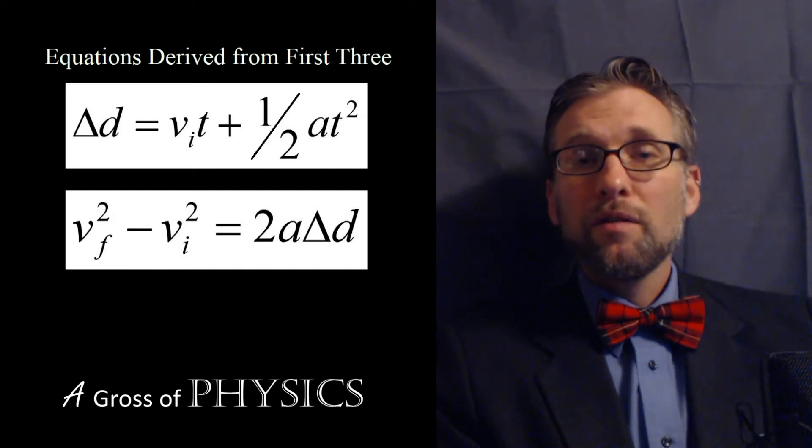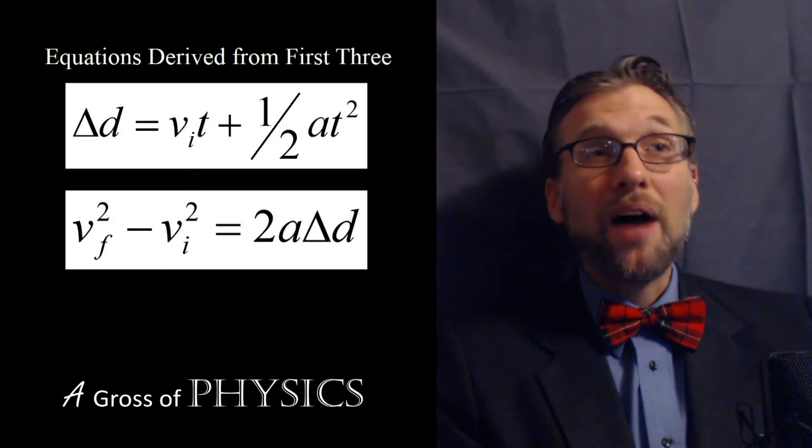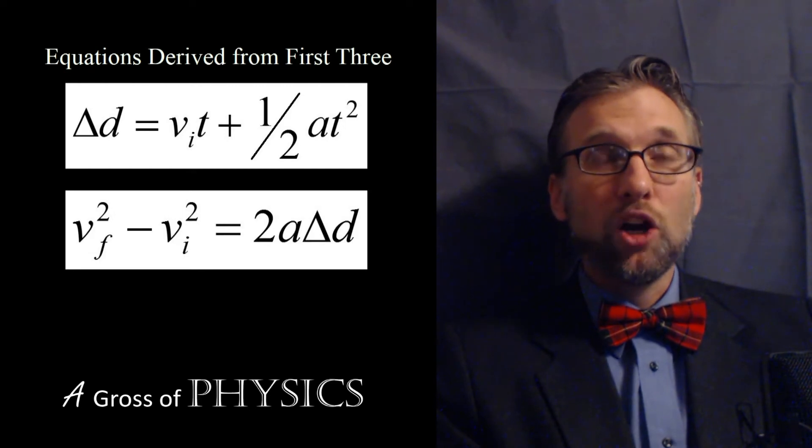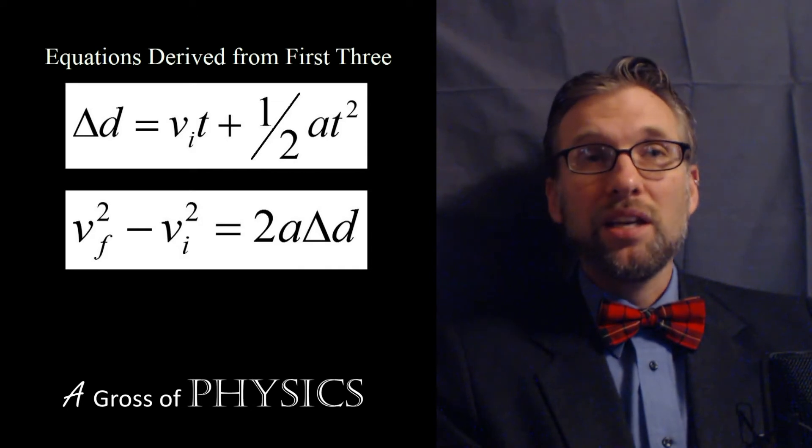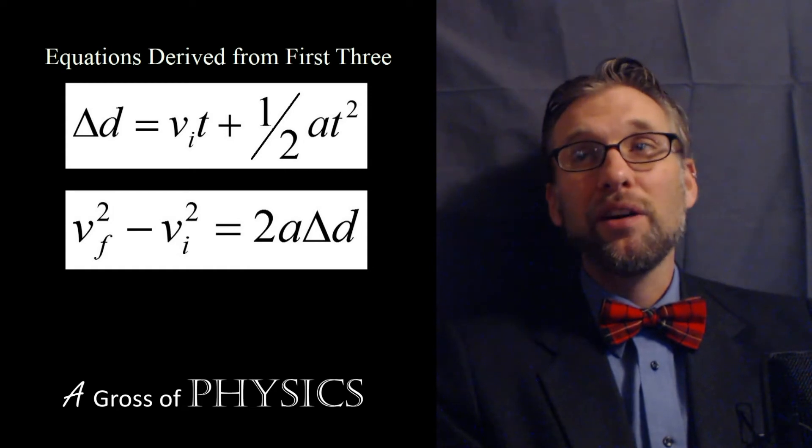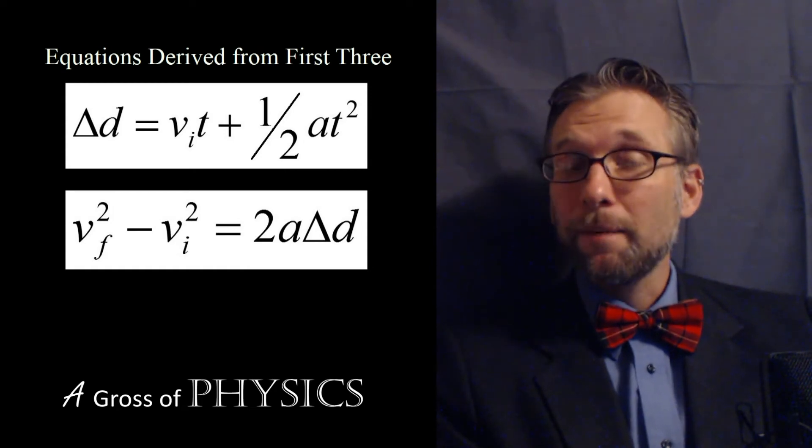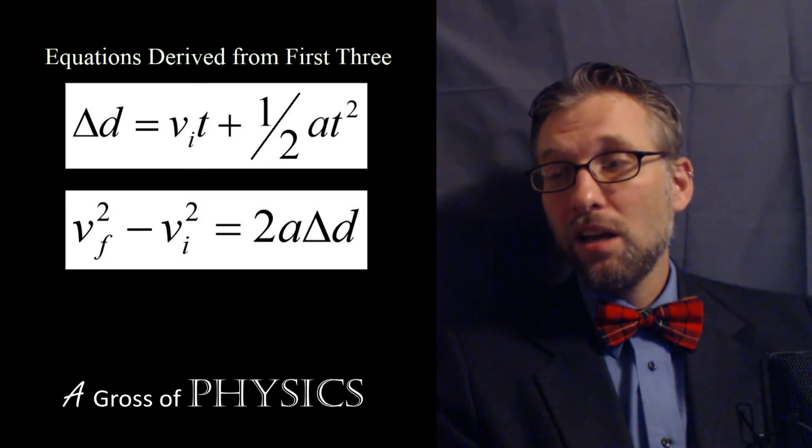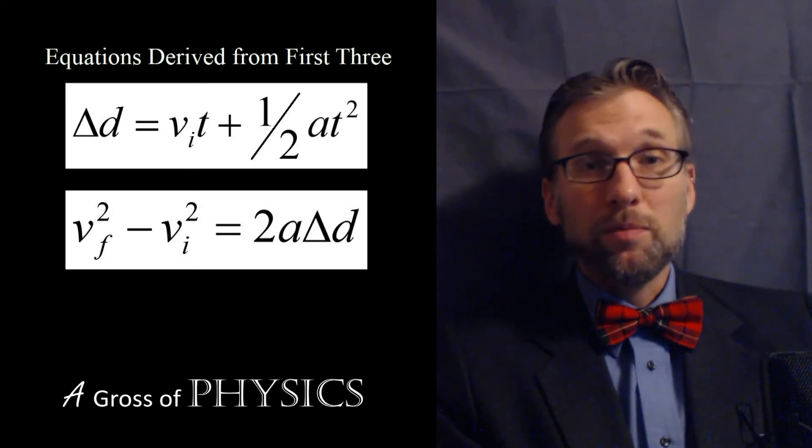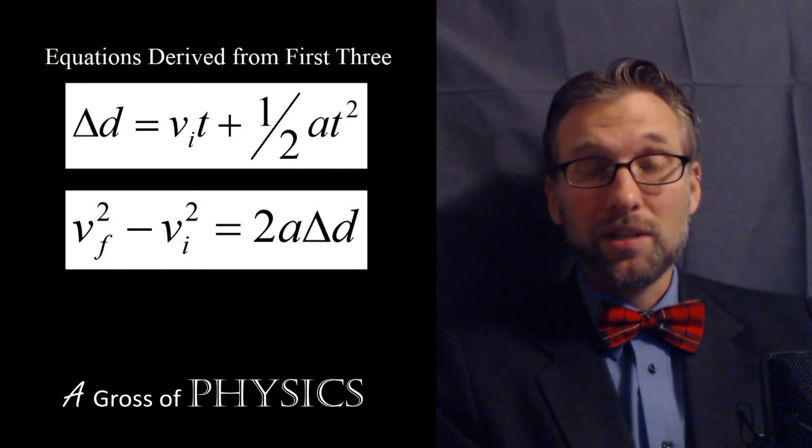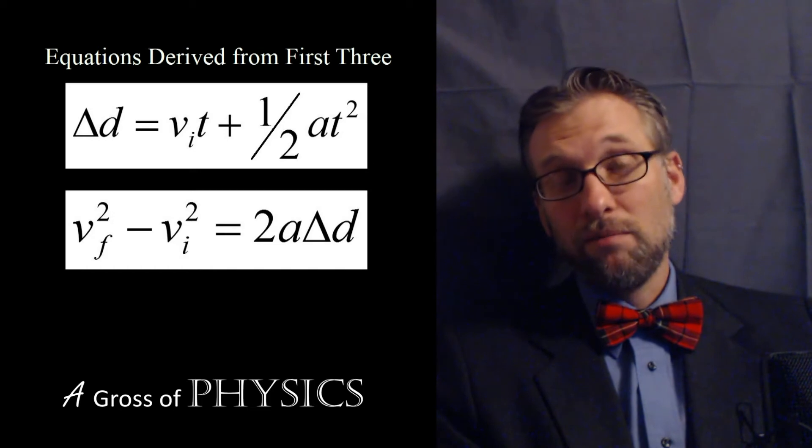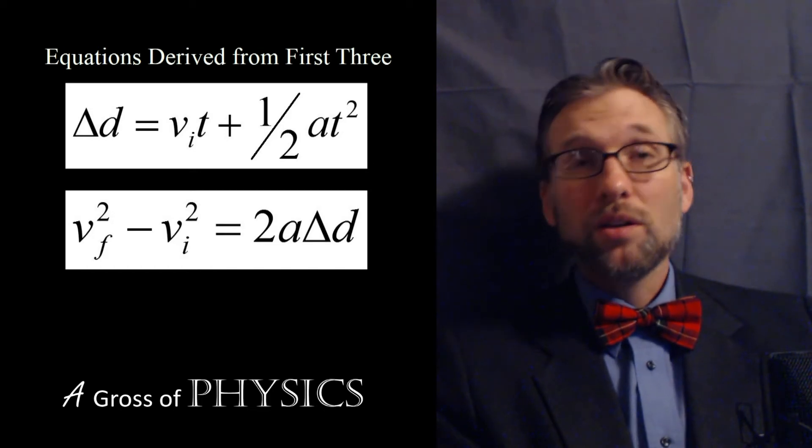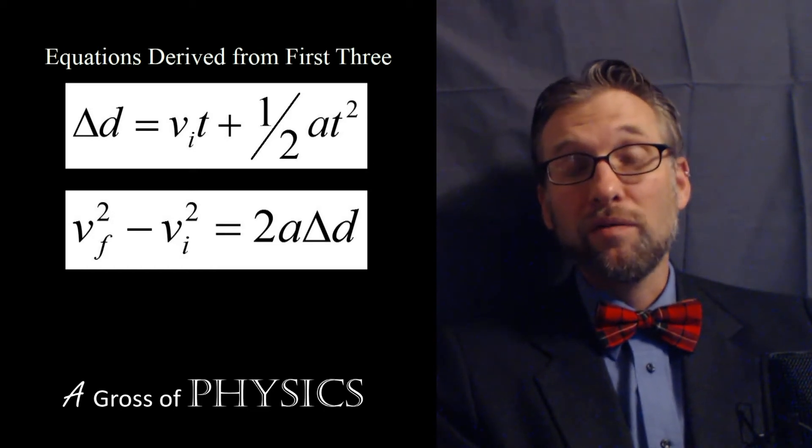Equation five can be derived by combining equation four with equation three. Sometimes we don't have the time available. Each one of these equations has a different variable missing. Some problems may not have final velocity - that would be equation four. Some problems may not have time - that would be equation five.